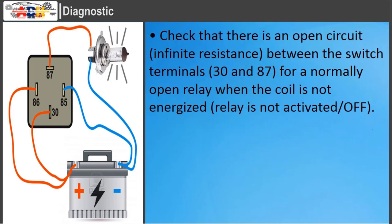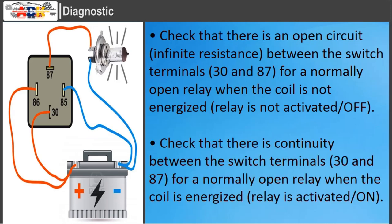Check that there is an open circuit between the switch terminals 30 and 87 for a normally open relay when the coil is not energized. Check that there is continuity between the switch terminals 30 and 87 for a normally open relay when the coil is energized.